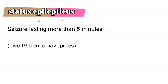Status epilepticus is the state of having a seizure for more than five minutes. The reason this is emphasized so strongly is that if the seizure proceeds for more than five minutes, it is unlikely to stop on its own — the patient will keep seizing until he eventually dies unless we give him benzodiazepines.